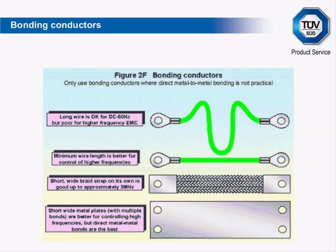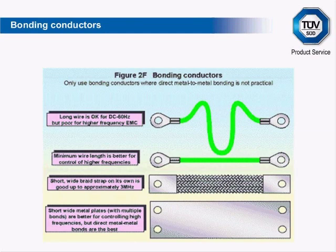When it comes to bonding, there is no better way than metal-to-metal contact. When this is not practical, bonding conductors are an option. Long wire is used for low frequency, typical of a safety bond on a cabinet panel or door. The shortest possible bond is used for high frequency, though this is not practical for cabinet panels or doors. The short wide brace strap is most effective below 3 MHz, and a short wide metal plate with multiple bonding points for higher frequency. Avoid multiple bonding where possible — ground loops can easily be made which will have current flowing through them, and a cabinet door with a safety ground cable at the top and an RF ground strap at the bottom will create a ground loop inducing unwanted emissions.